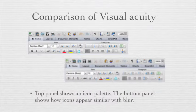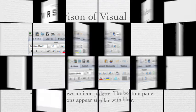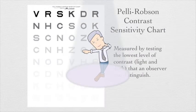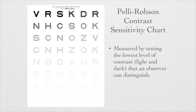This is an interface of Microsoft. The top panel shows an icon palette, and the bottom panel shows how the icon appears when simulating lower visual acuity. Contrast sensitivity is measured by testing the lowest level of contrast — light and dark — that an observer can distinguish. An observer may be shown letters of varying density and asked to read as far down as possible.